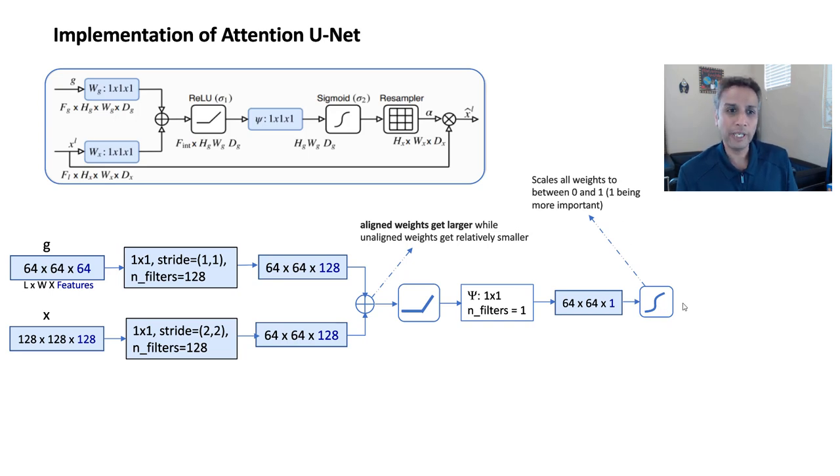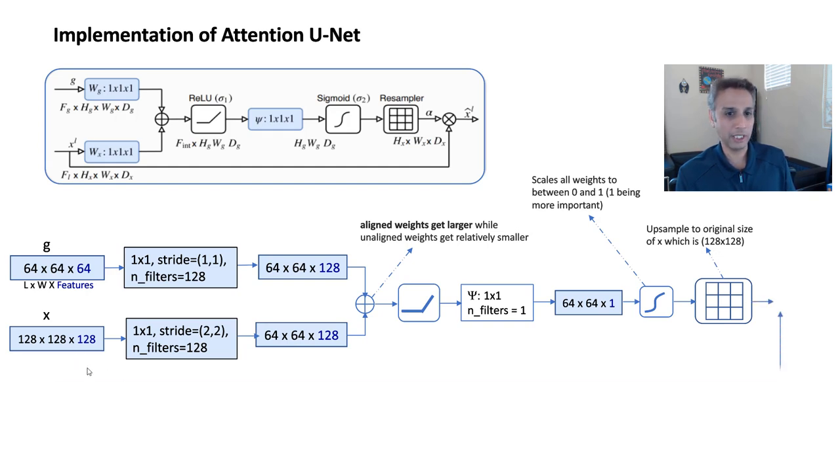And once this is done, you have your weights. All you need to do is resample them or upsample them to the same size as X. Upsample to original size, which is 128 by 128. And once it's the same size as X, now you can go ahead and multiply these two. So you're taking this X and you're taking the output from here and you're multiplying this element wise. So in a way, think of this as at each pixel that's coming from X, you're multiplying the pixel value with a weight value that we calculated using this process.